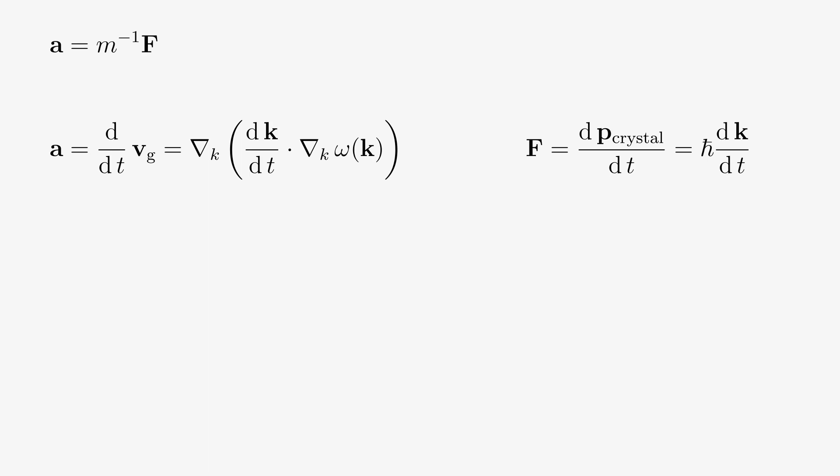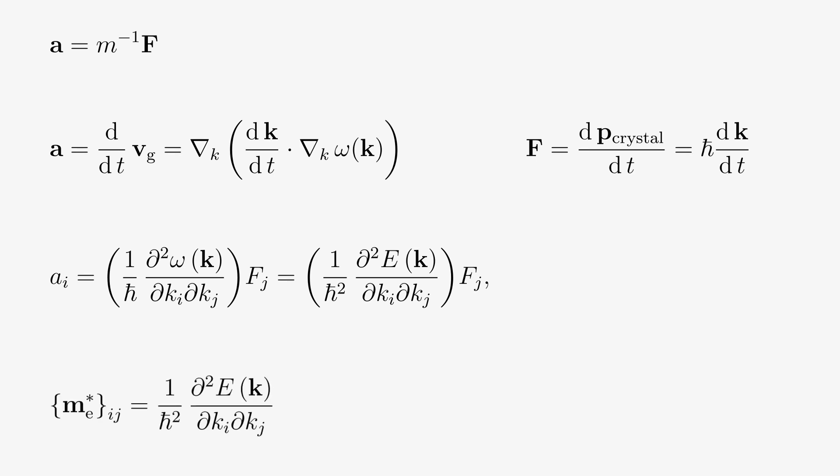We can then take this expression for the force, reorder quantities and insert it into the acceleration. We then find that after we worked out the math we end up with a Hessian-like quantity so second derivatives of the energy with respect to elements of the k vector and this is our effective mass.